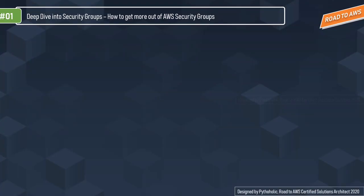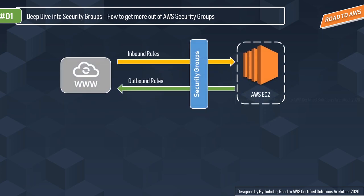Let's do a deep dive on security groups and see what additional information we need to learn for the certification. Security groups act as a virtual firewall for your instance to control the inbound and outbound traffic. Inbound refers to incoming traffic coming into the host, and outbound refers to outgoing traffic — requests going from the host machine to the outside world.